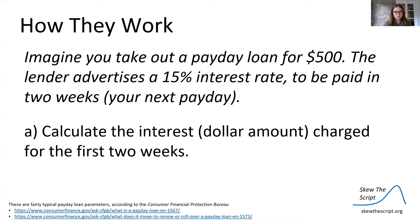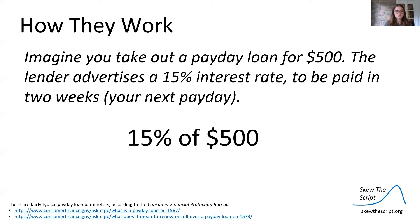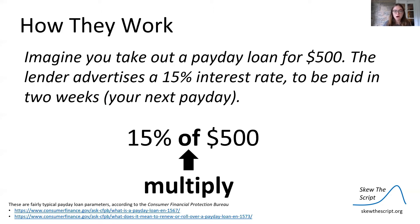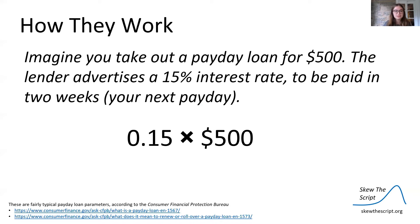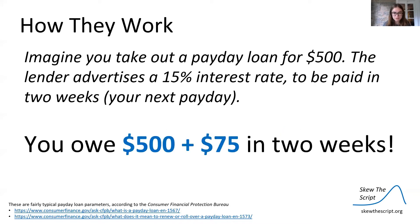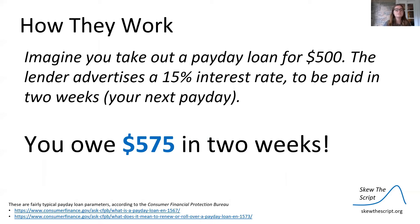Calculate the interest in dollar amounts charged for the first two weeks. We have our 15% interest of our initial loan of $500. "Of" indicates multiplication. 15% as a decimal — 0.15 times 500 — is equal to $75. You owe the initial loan, the $500, plus the $75 interest in two weeks. You owe $575 in two weeks.